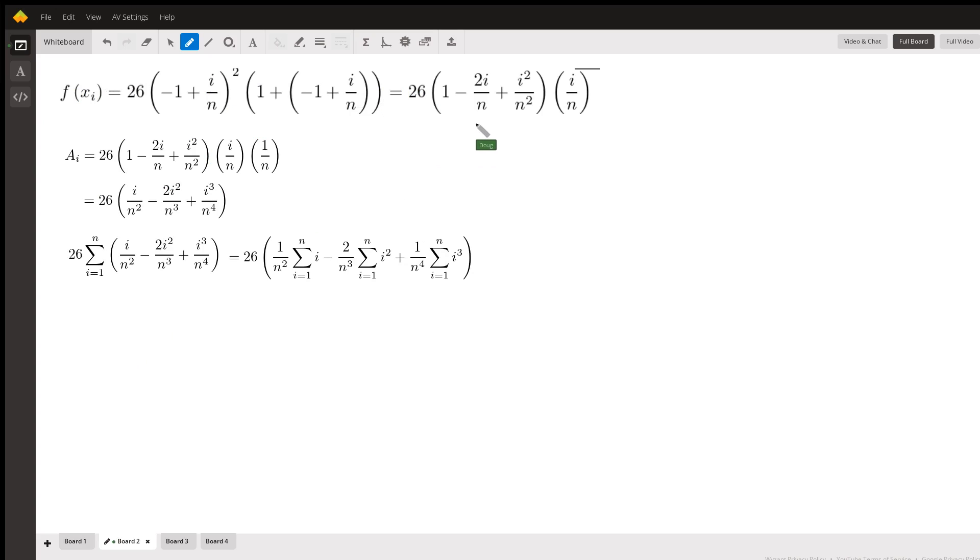There's that formula again, and now we want to find a formula for the area of the ith rectangle. That means we multiply by the width—length times width. This first two or three factors was the height, this is the width, or Δx.